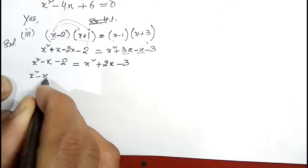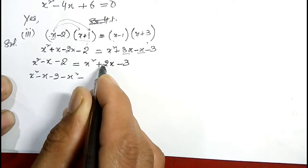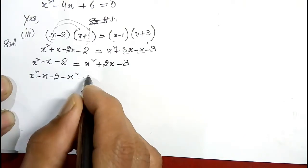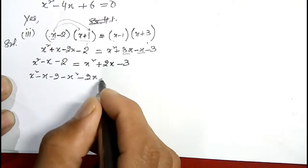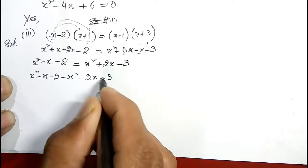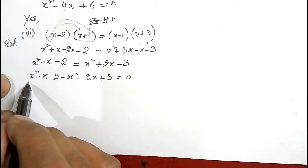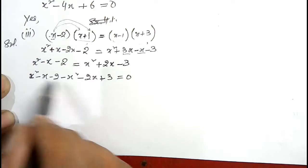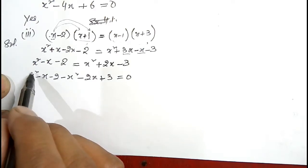Now I will shift the right hand side terms to the left hand side. This becomes x squared minus x minus 2 minus x squared plus 2x plus 3 equals zero. Now I will perform addition and subtraction of these terms.